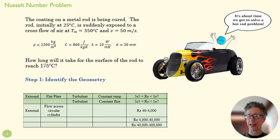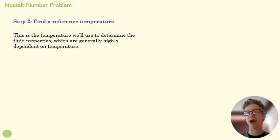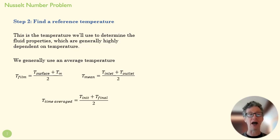Our next step is to find a reference temperature. Why do we do that? We need a reference temperature because fluid properties tend to be highly dependent upon temperature, especially if they're big temperature changes. A lot of times we want to find an average temperature in a flow, and we can do that in a lot of different ways.